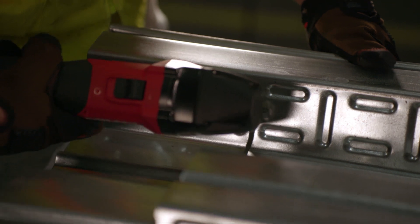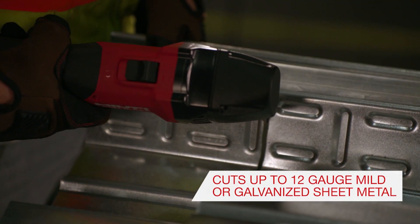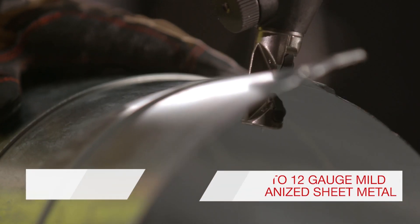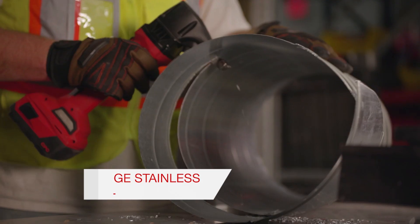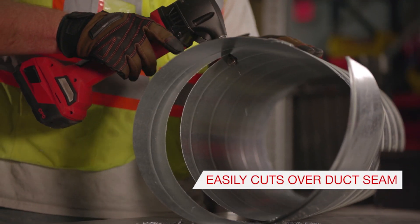This high-performing cordless nibbler can cut up to 12-gauge mild or galvanized sheet metal, 14-gauge stainless sheet metal, and easily cut overlapped seams in ducting.